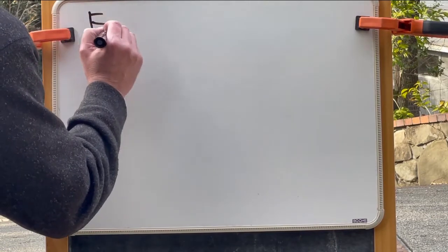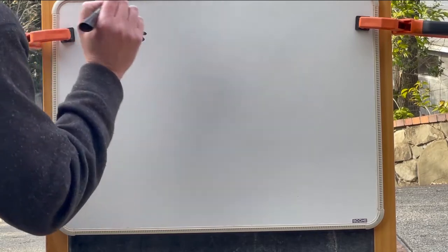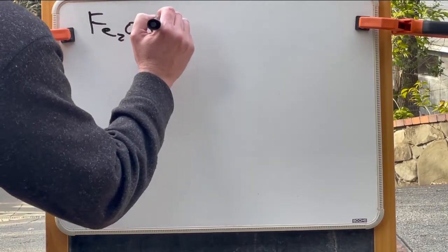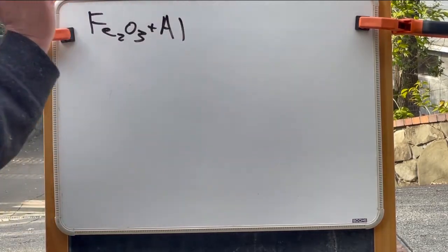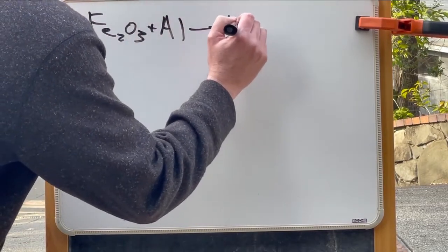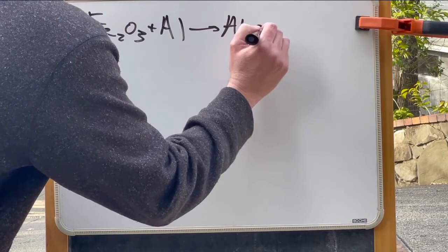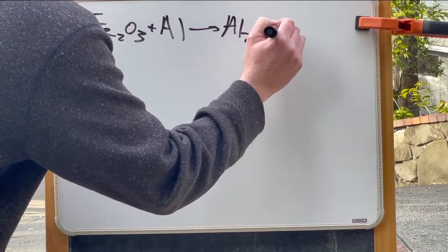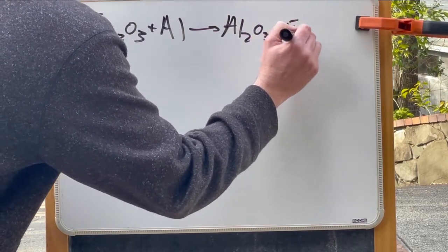We're going to take iron oxide, commonly called rust, combine it with aluminum metal, commonly called aluminum metal. We'll oxidize the aluminum producing aluminum oxide and we will reduce the iron creating elemental iron.